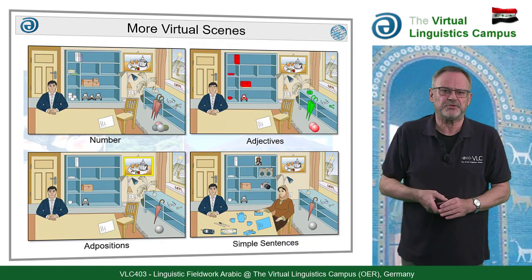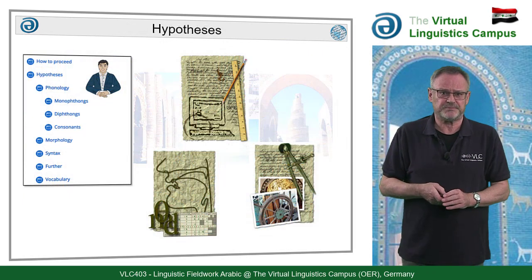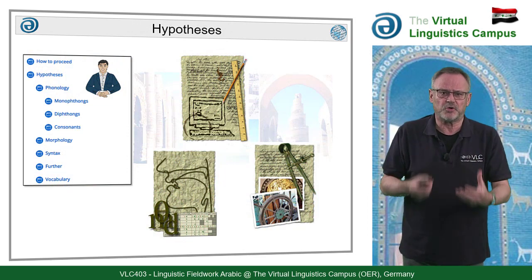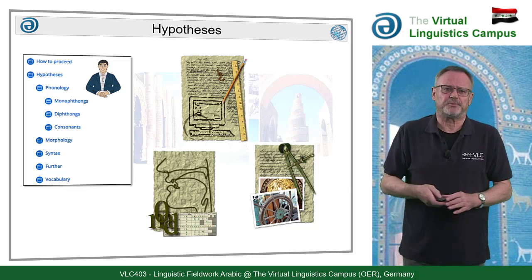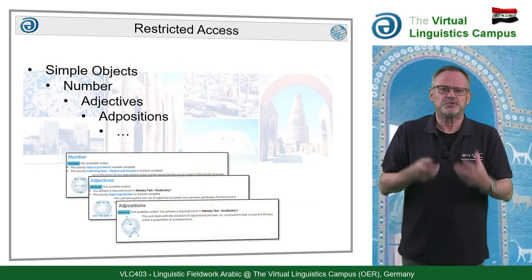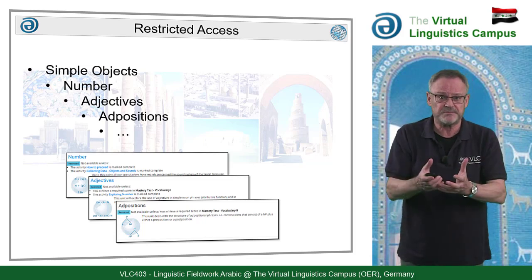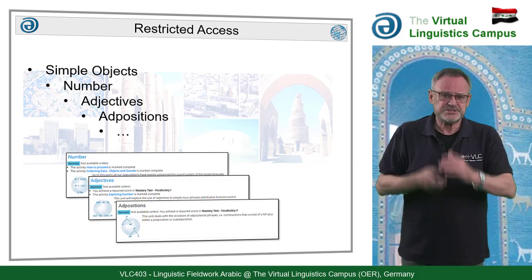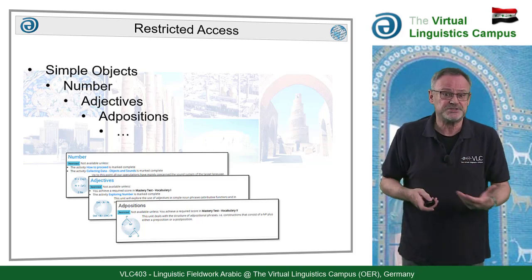Starting with the second explorative unit, each unit has a hypothesis section, where the previous assumptions and speculations are not only summarized, but are also judged by the native speaker. All units or topics are activated in a successive fashion. That is, in contrast to many other VLC courses, you cannot access the units all at once, but only successively. This guarantees that students first build their hypotheses before they see the solutions.